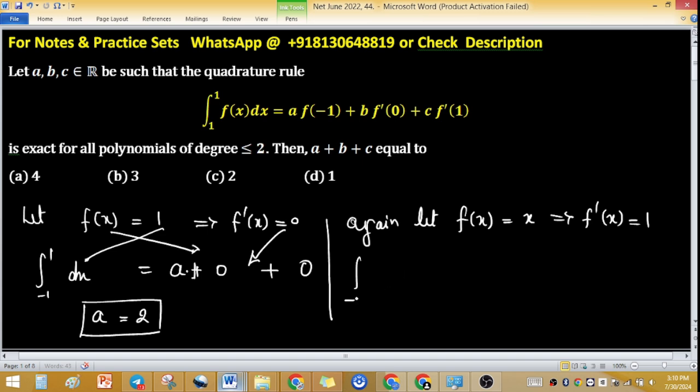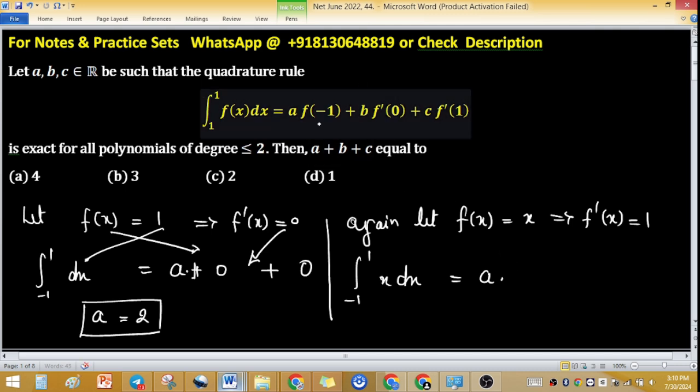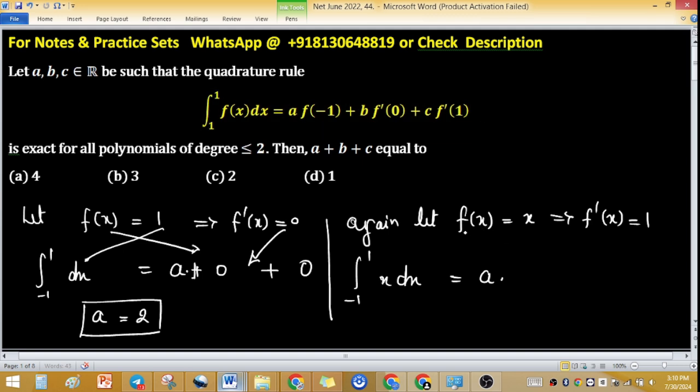As in previous steps, integral from -1 to 1 of x dx equals A. Use corresponding values of f(-1), f'(0), and f'(1). For this, consider the polynomial: A·(-1) plus B times 1 plus C times 1.